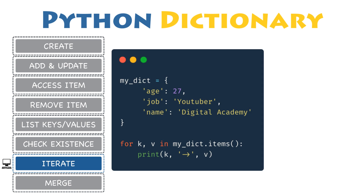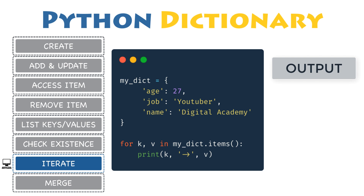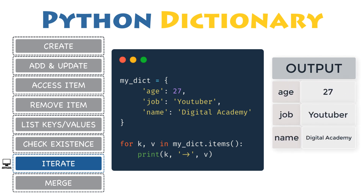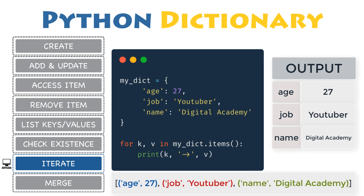When working with dictionaries, it is likely that you will want to work with both keys and values. One of the most useful ways to iterate through a dictionary in Python is by using items(), which returns a new view of the dictionary's items containing all key-value pairs as tuples inside a list. On each iteration, the current tuple will be unpacked in the form of key-value, so you can access the key or value individually.